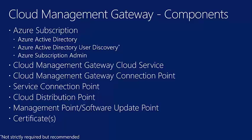The Cloud Management Gateway connection point is an on-prem site system role in Config Manager. It enables a consistent, high-performance connection between the Config Manager network and the CMG service in Azure. Note that even if Config Manager is running in Azure rather than on-prem, the same concepts apply — you likely still need the CMG. The connection point also publishes settings including connection information and security settings to the CMG.